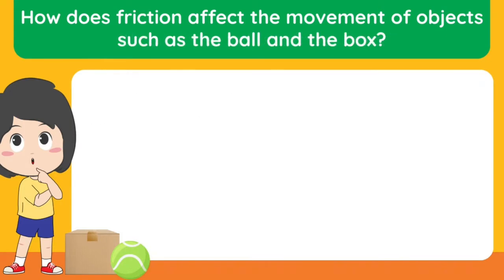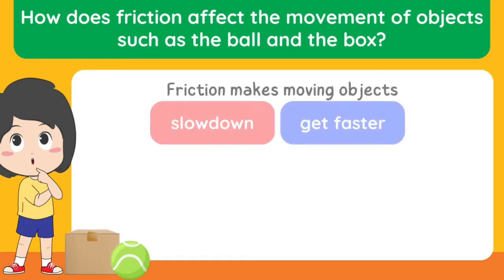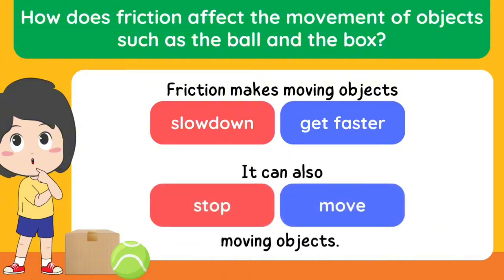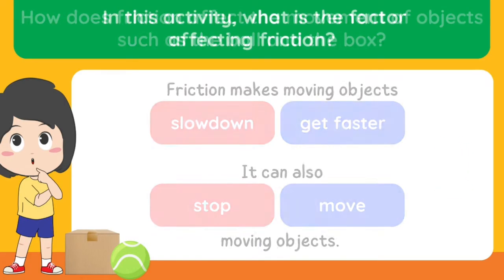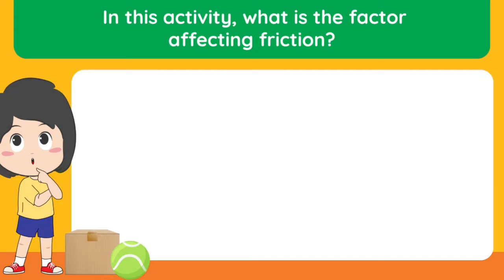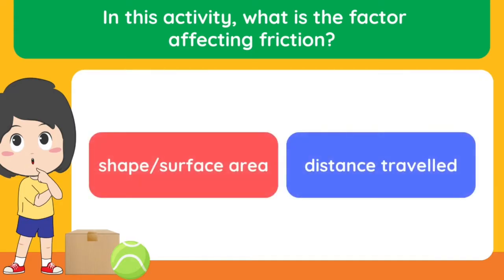How does friction affect the movement of objects such as the ball and the box? Friction makes moving objects slow down. It can also stop moving objects. In this activity, what is the factor affecting friction? The answer is surface area.